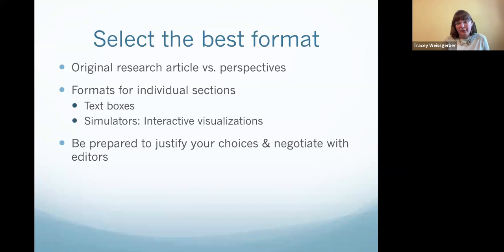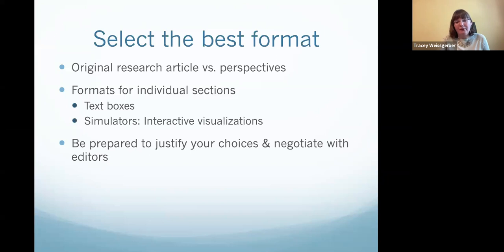Be prepared to justify your choices and negotiate with editors. We regularly have conversations about needing more figures, especially for visualization papers. Some journals don't have a text box format, so we've had to ask them to create one for us. Always justify why you need a particular format, and discuss with the editor if it's against journal policy to see if there's flexibility. Your goal is to write the best paper you can, and the editor should ultimately want that too — a widely disseminated paper helps their journal and publisher.